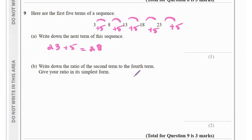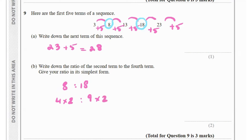Part b says write the ratio of the second term to the fourth term in its simplest form. The second term is 8 and the fourth term is 18, so that's 8 ratio 18. Since 8 is 4 times 2 and 18 is 9 times 2, we cancel the 2s to get 4 ratio 9. Since 4 and 9 don't share a common factor, we can't simplify further, so the answer is 4:9.